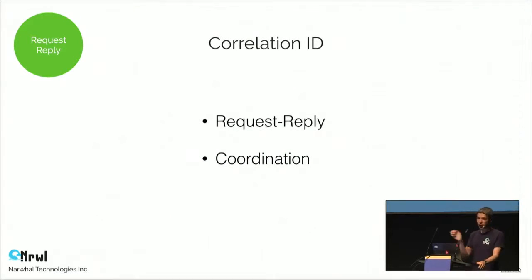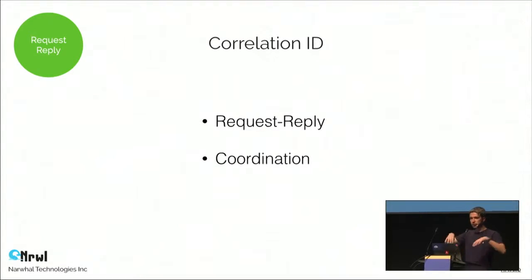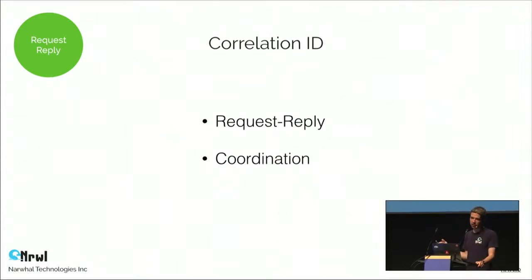In addition to supporting request-reply, a correlation ID can be used for other coordination-related tasks. For example, if we want to make sure a complex interaction that dispatches multiple actions is fully complete, we can assign the same correlation ID to all of those actions and then wait for all of them to complete.